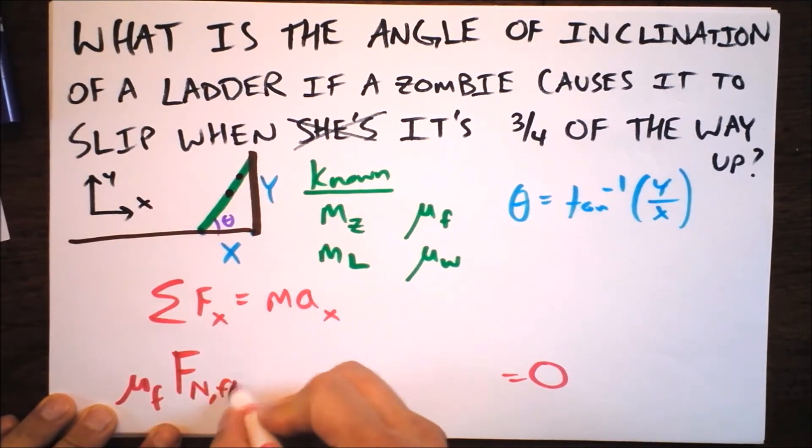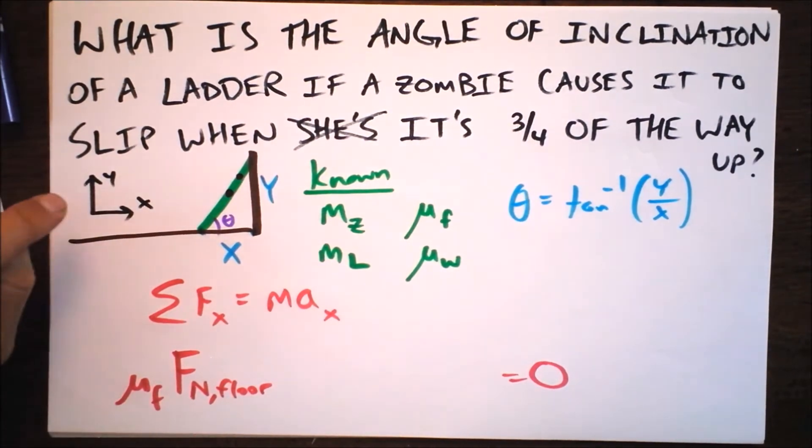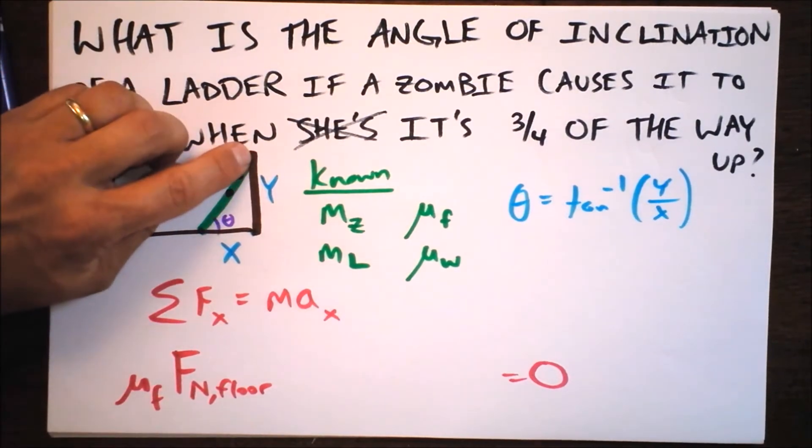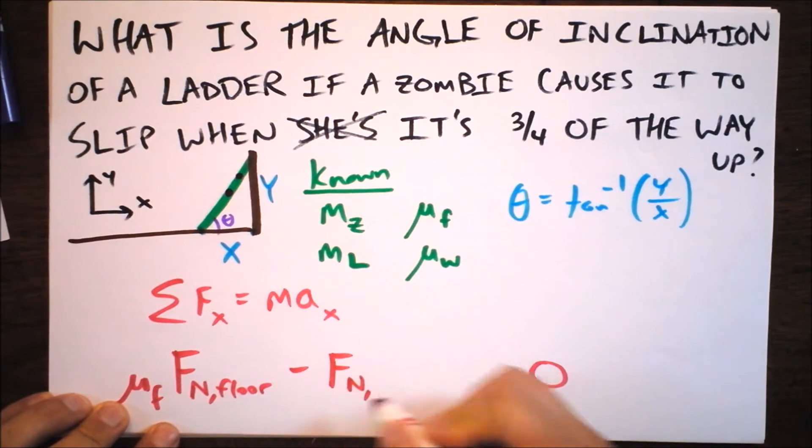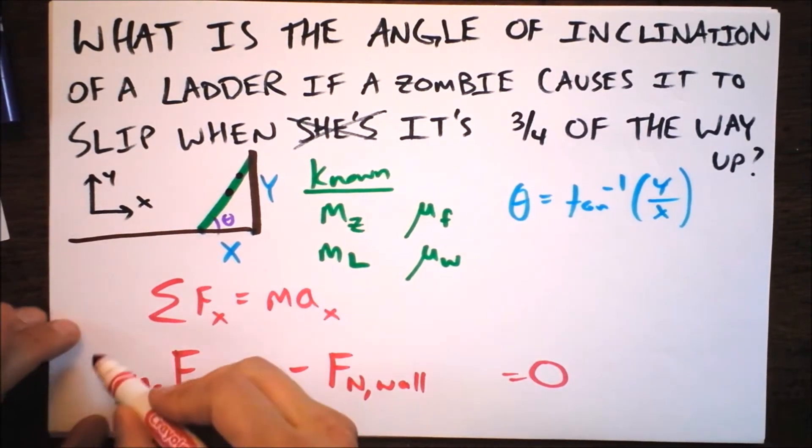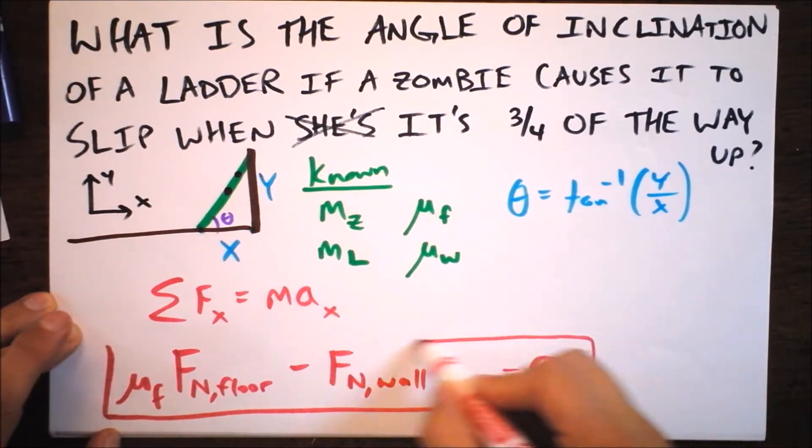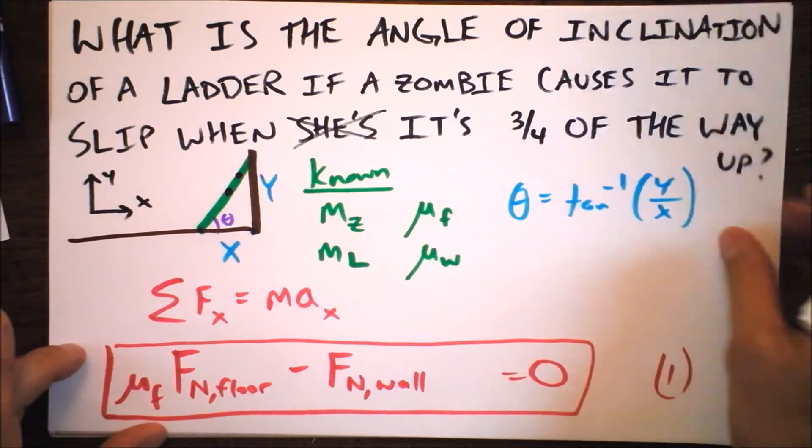I'm going to have μf times the normal force on the floor. And then there's a leftward force also, and the only place that comes from is the normal force over at the top. So I'm just going to write minus the normal force at the wall. So this is a really simple equation.